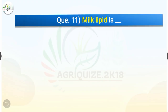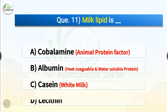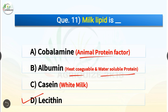Question number 11. Milk lipid is dash. The options are cobalamin, albumin, casein or lecithin. The correct answer is option D, lecithin. So milk lipid is lecithin, whereas cobalamin is the animal protein factor. Albumin is heat coagulable and water soluble protein, and milk is white due to the presence of casein.